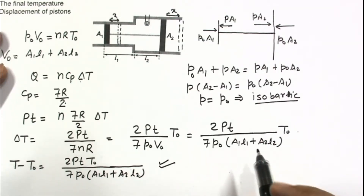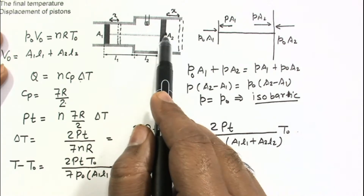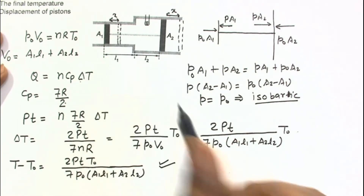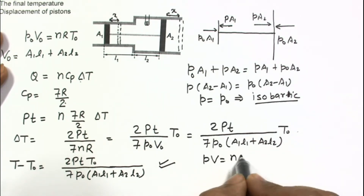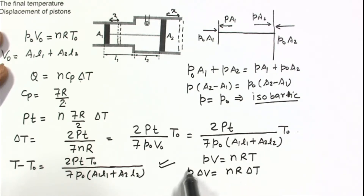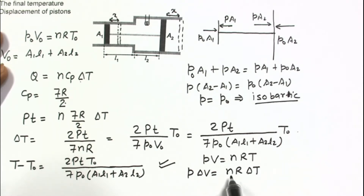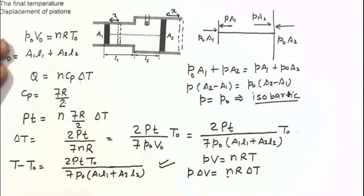To find the displacement of the pistons, suppose each piston moves by distance x — both move together since they are connected by the rigid rod. From PV equals NRT, differentiating gives P·ΔV equals NR·ΔT. Since pressure remains constant and always equals P0, ΔV is the change in volume, and NR·ΔT is the change in temperature term. The change in temperature is already known, and NR can be substituted using P0·V0 equals NR·T0.